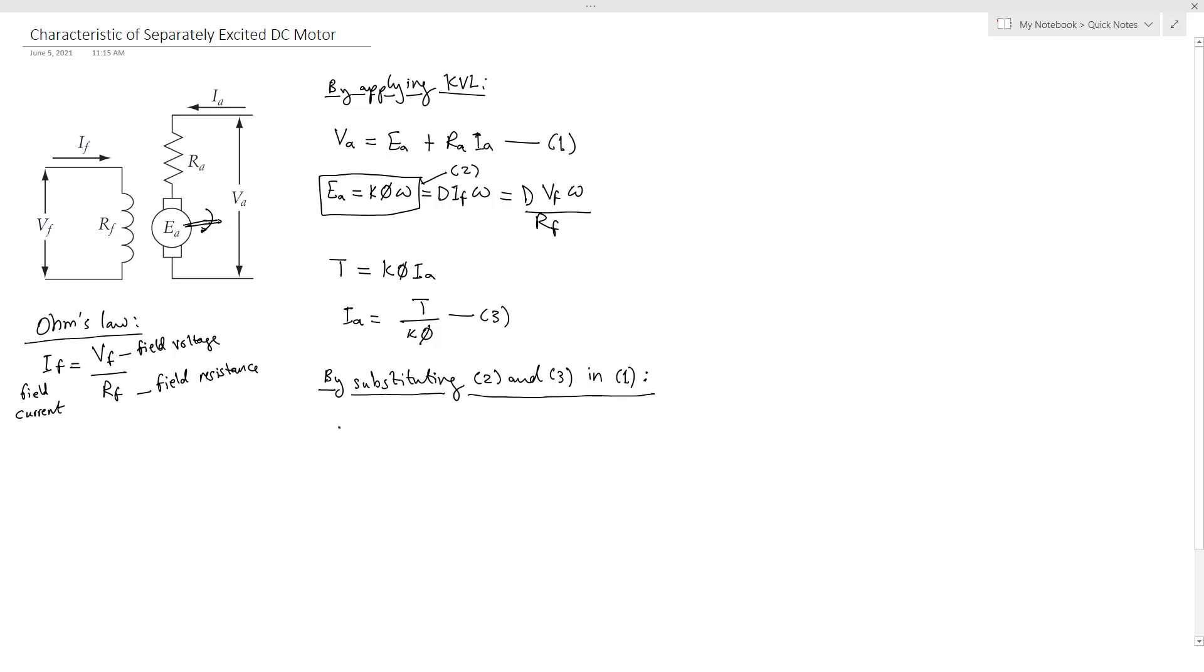The armature voltage will equal K Phi Omega plus RA T over K Phi. We want omega to be the subject of this equation, so we have to take it out.